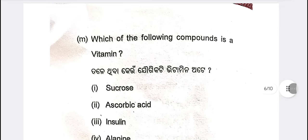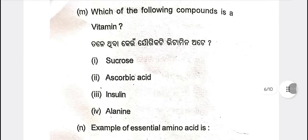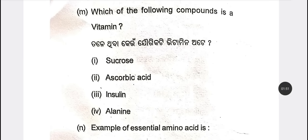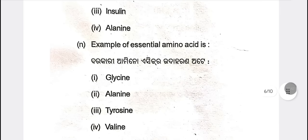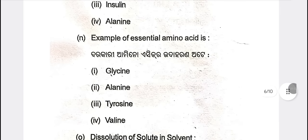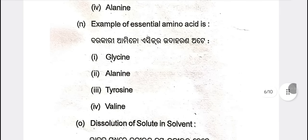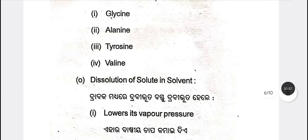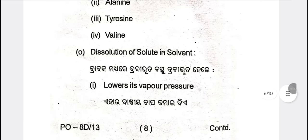Which of the following compound is the vitamin? It is ascorbic acid. The first question is: ascorbic acid is an example of essential amino acids — essential amino acids versus non-essential amino acids.